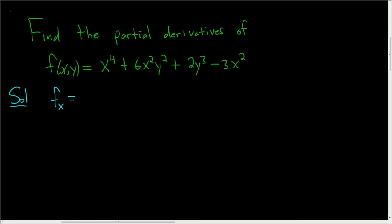So here the derivative of x to the fourth, that'll be 4x cubed using the power rule. You bring the 4 down and you subtract 1. 4 minus 1 is 3. Here we're treating the y term as constant, so this will be 12xy squared. It just hangs out as a constant.